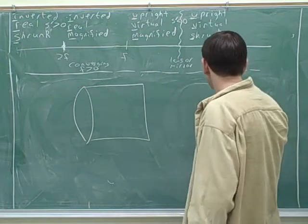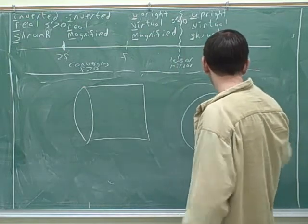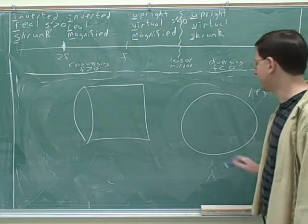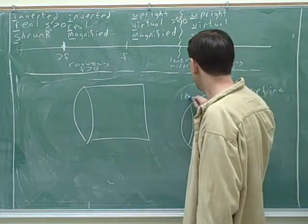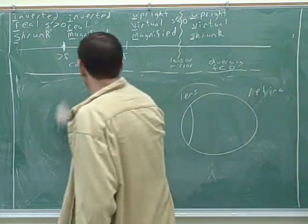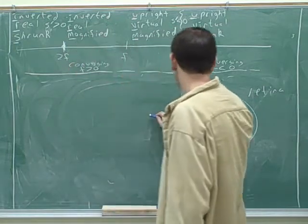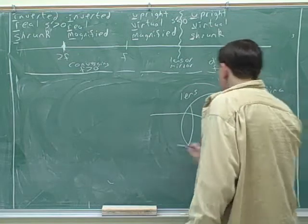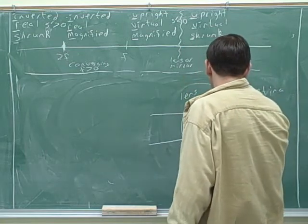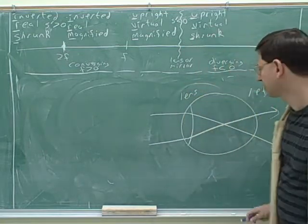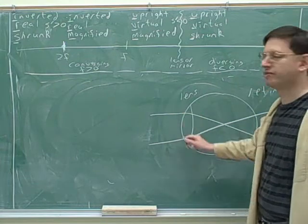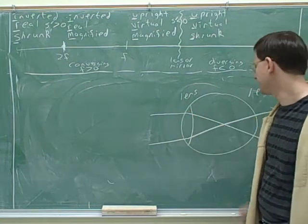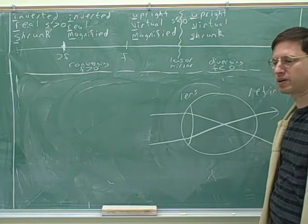Alright, here's our eyeball. Remember we call the back of the eyeball the retina, and here at the front we've got the lens. The two rays that you drew were pretty good, except it's probably more conventional to draw them coming in like this — just one from above and one from below. I think you drew them both coming in from above at different angles. That's fine, but this is a more conventional way to draw this picture.